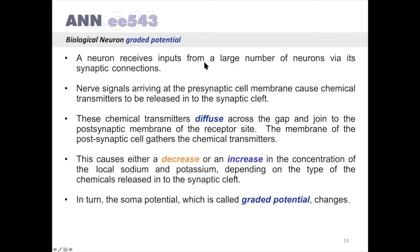A neuron receives input from a large number of neurons via its synaptic connections. Nerve signals arriving at the presynaptic cell membrane cause chemical transmitters to be released into the synaptic cleft.